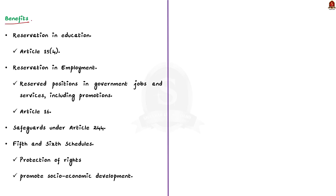Firstly, reservation in education: ST individuals have reserved seats in educational institutions, ensuring better access to quality education. This is ensured under Article 15 of the Constitution. Next is reservation in employment: ST communities are provided with reserved positions in government jobs and services, including promotions. This is ensured under Article 16. Then, there are various safeguards for ST population under Article 244, along with the 5th and 6th schedules of the Constitution.